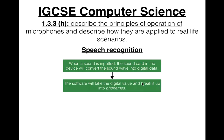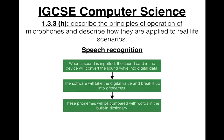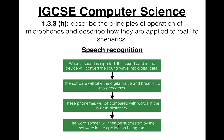The software will take the digital data and break it up into phonemes. A phoneme is the individual sound elements within words — for example, 'hello' would be broken into: ha, eh, o, oo. Those are the phonemes. The phonemes will be compared with words in the built-in dictionary, if there is one. The word spoken will then be suggested by the software, and hopefully the application will correctly output whatever has been spoken.